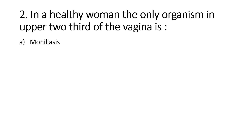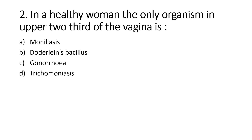The normal flora of the vagina is: Option A, Moniliasis; Option B, Doderlein's Bacillus; Option C, Gonorrhea; Option D, Trichomoniasis. Right answer is Option B, Doderlein's Bacillus. The vagina is highly acidic because of Lactobacillus acidophilus, or Doderlein's Bacillus bacteria, which converts glycogen to lactic acid.